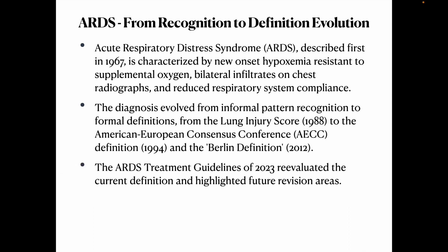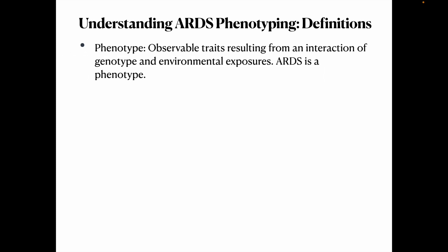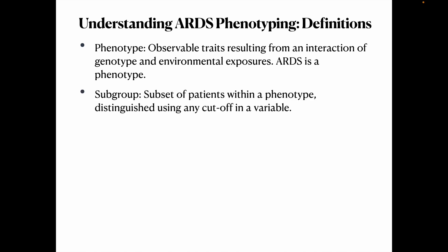These guidelines re-evaluate the definition and look into future research that needs to be done. The most important thing to understand is the different phenotyping in ARDS. A phenotype is an observable trait resulting from an interaction of genotype with exposure. ARDS itself can be considered a phenotype. Subgroups are subsets of this phenotype distinguished by a cutoff in a particular variable — for example, PF ratios, dividing patients into three types.